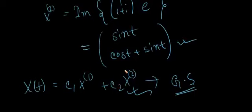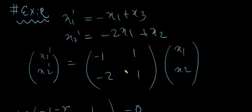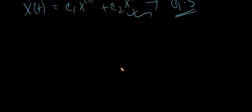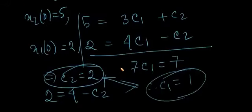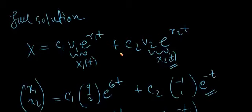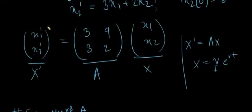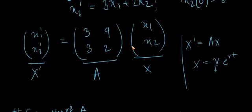I have only shown two-by-two systems, but this approach also works for any n-by-n system that is homogeneous with constant coefficients — equations of the same form but with more variables and a larger coefficient matrix. This is how you can formally solve systems of differential equations using the techniques of linear algebra. That will be it for today, and I'll see you in the next lecture. Thank you.